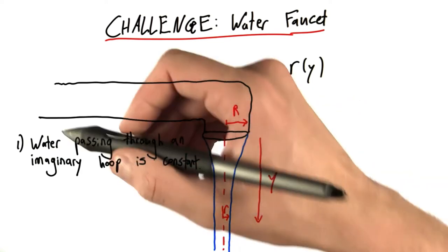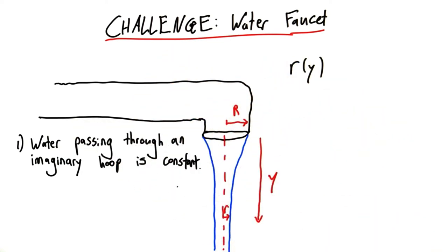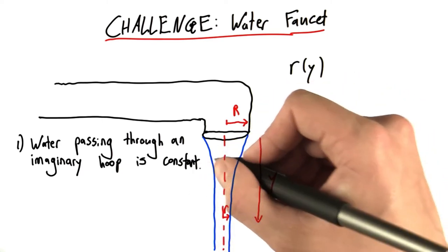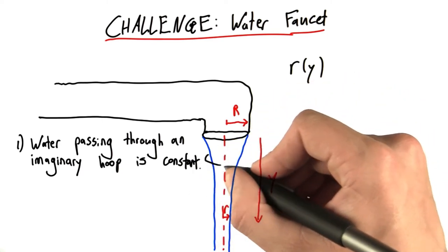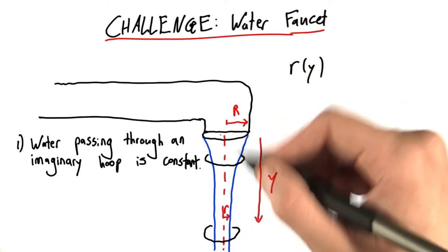There's a couple key insights to make here. First is that the water passing through an imaginary hoop does so at a constant rate. And that is totally confusing if I don't explain it more. What I mean is, if I drew an imaginary ring here,